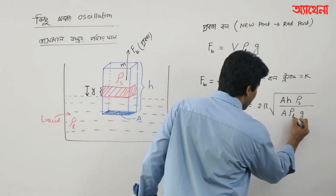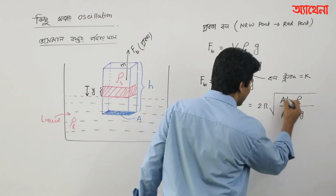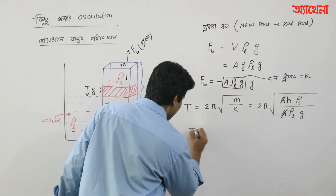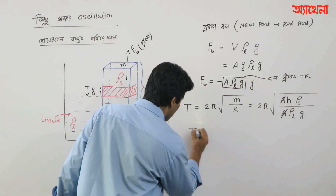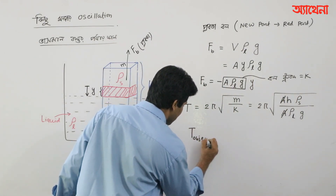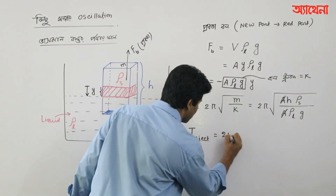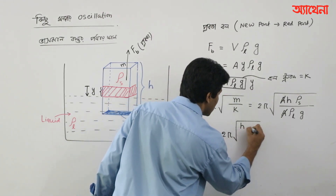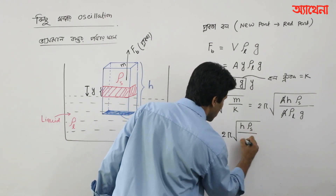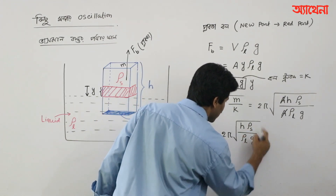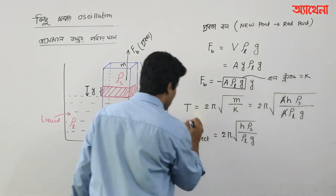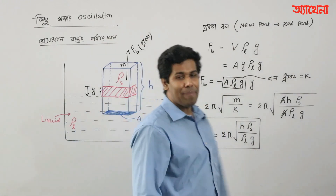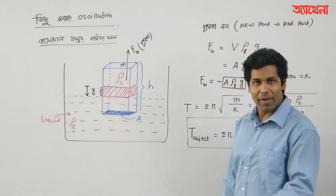So if we look at this, we have rho s, rho l, and rho l. So if we look at the period T of the object: 2 pi, just root over h into rho s by rho l into g. So if we look at the T of the object, we look at the T of the object.